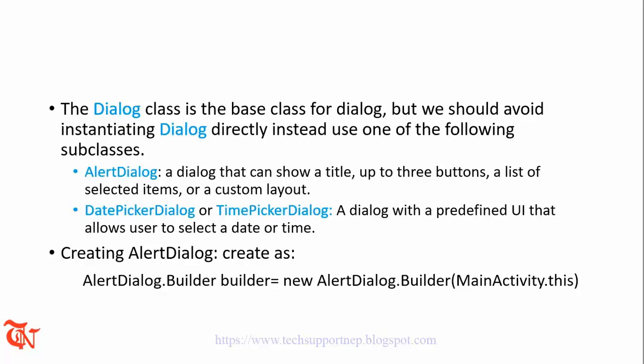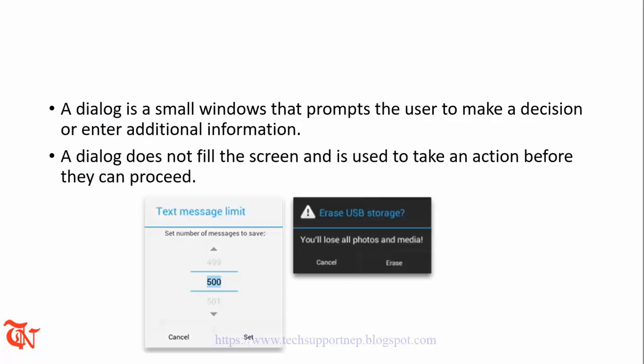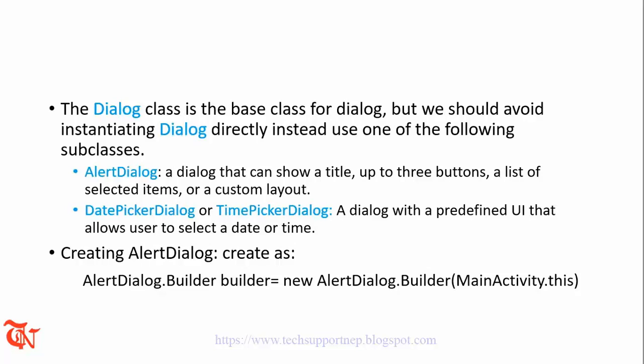The first subclass is AlertDialog — a dialog that can show a title, up to three buttons, and a list of selectable items or a custom layout. The second one is DatePickerDialog or TimePickerDialog — a dialog with a predefined user interface that allows the user to select a date or time.